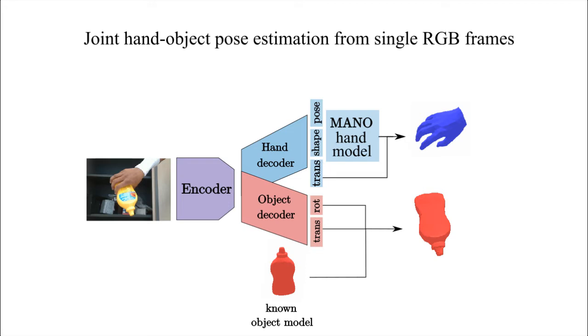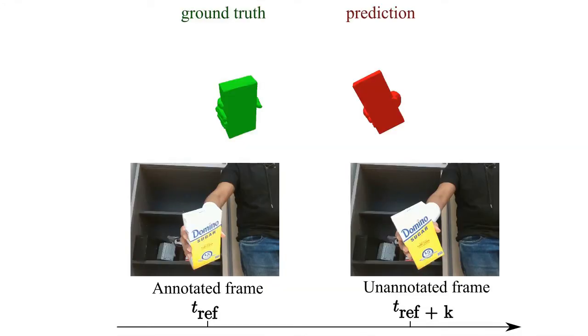We introduce a lightweight model for joint hand-object pose estimation and demonstrate its performance.